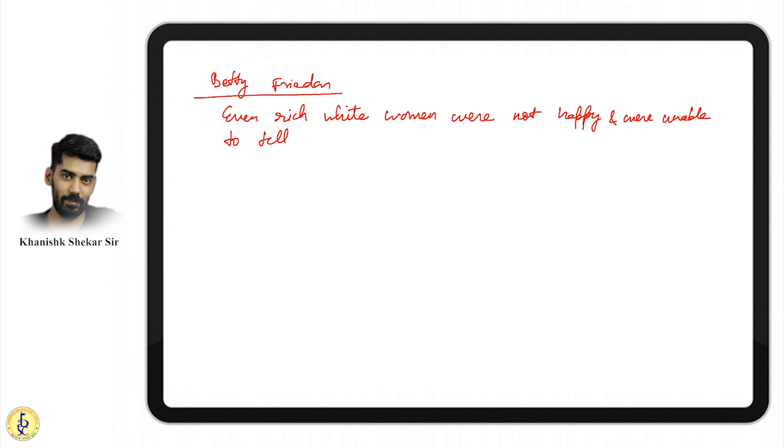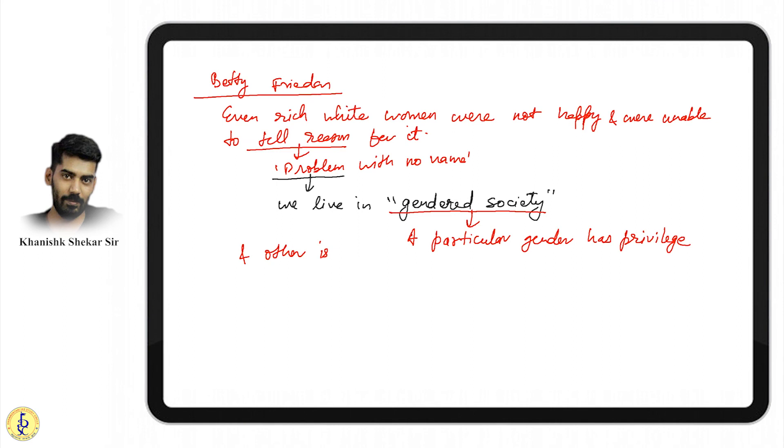They couldn't tell the reason—the problem with no name. You have money, family, clothes, food, everything you want, but don't have the ability to take decisions or engage in things you wish. She identified the problem: we live in a gendered society, meaning a particular gender has privilege and the other is at a disadvantage. Even after civil, political, social, and economic rights, discrimination against women doesn't end.